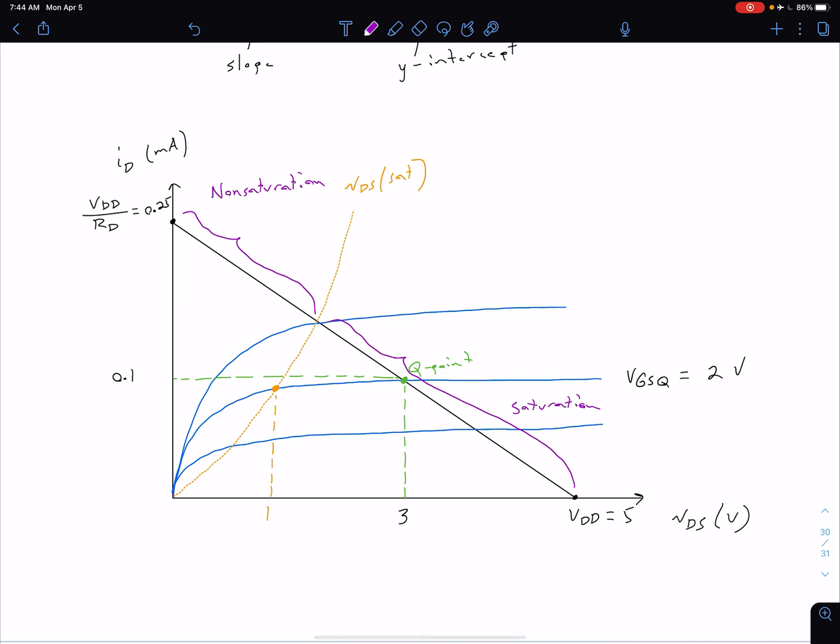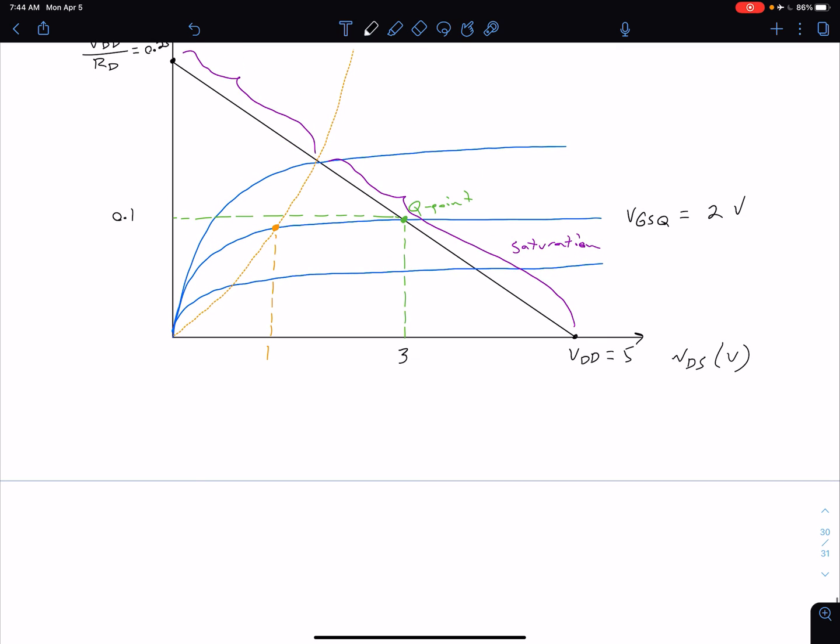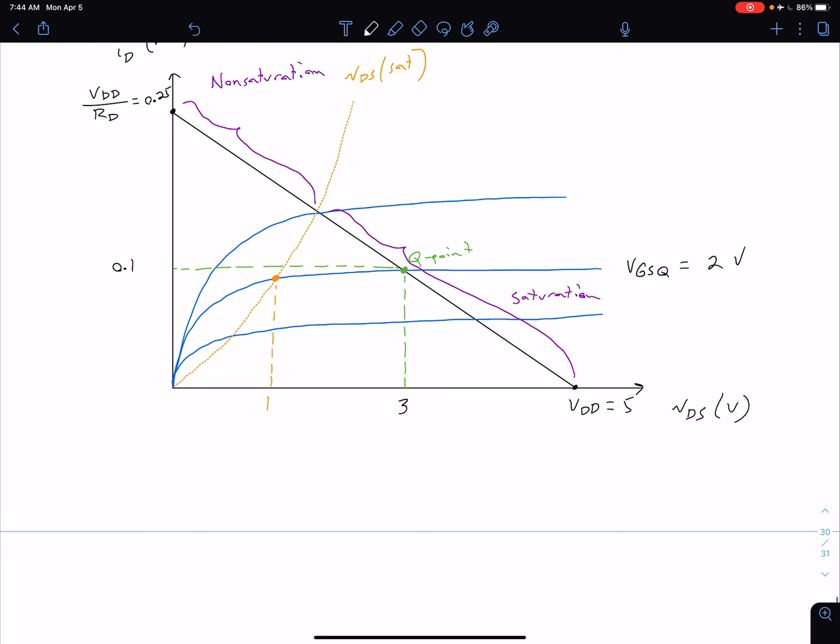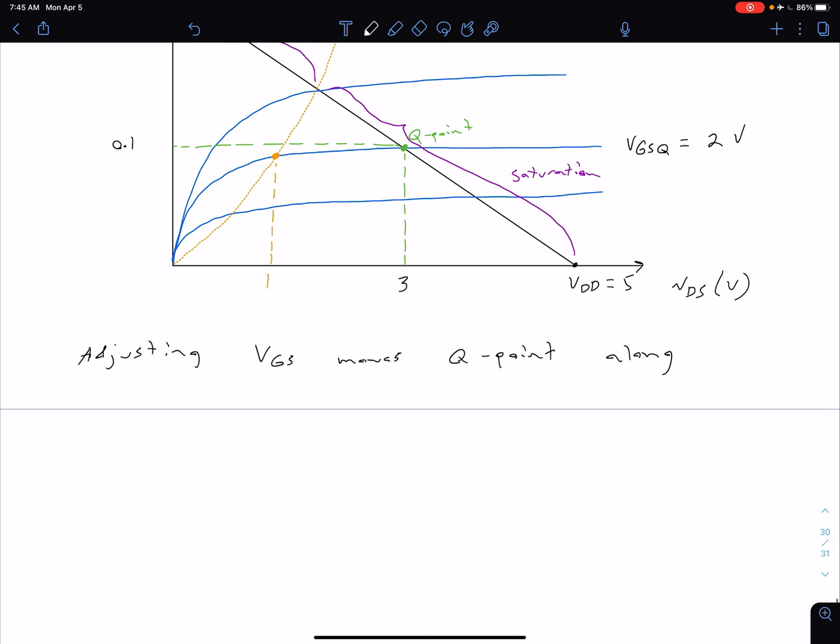As we saw in the previous example, our Q point, or the point that we analyzed, the 3 volts VDS and 0.1 milliamp ID, is in the saturation region. What we want to keep in mind is that, again, we move along this load line by adjusting our VGS for a given fixed circuit. Adjusting VGS moves our Q point along our load line.